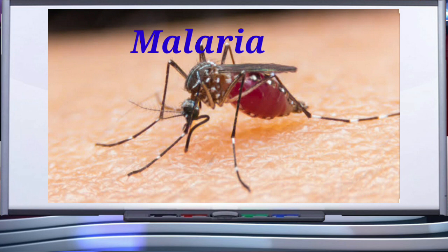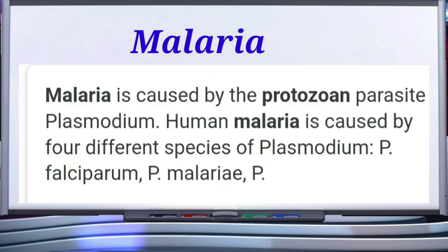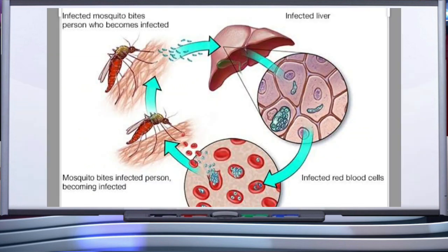Some human diseases are caused by protozoans. Malaria, a disease humans have been fighting for many years, is caused by a small protozoan called Plasmodium. Different species — Plasmodium vivax, Plasmodium malariae, and Plasmodium falciparum — are responsible for different types of malaria. Out of these, Plasmodium falciparum causes malignant malaria, which is the most serious and can even be fatal.